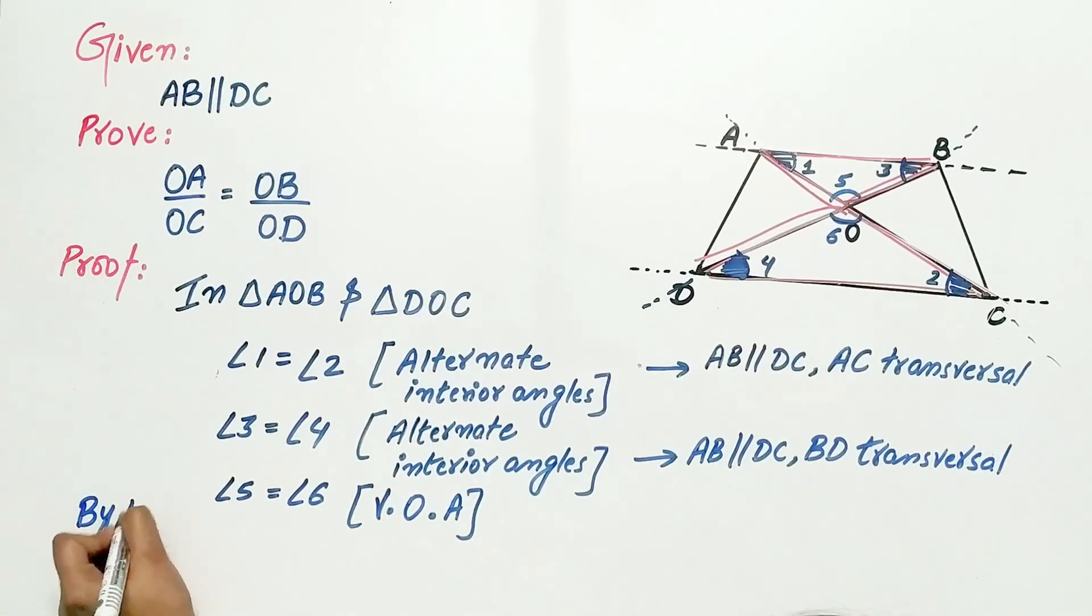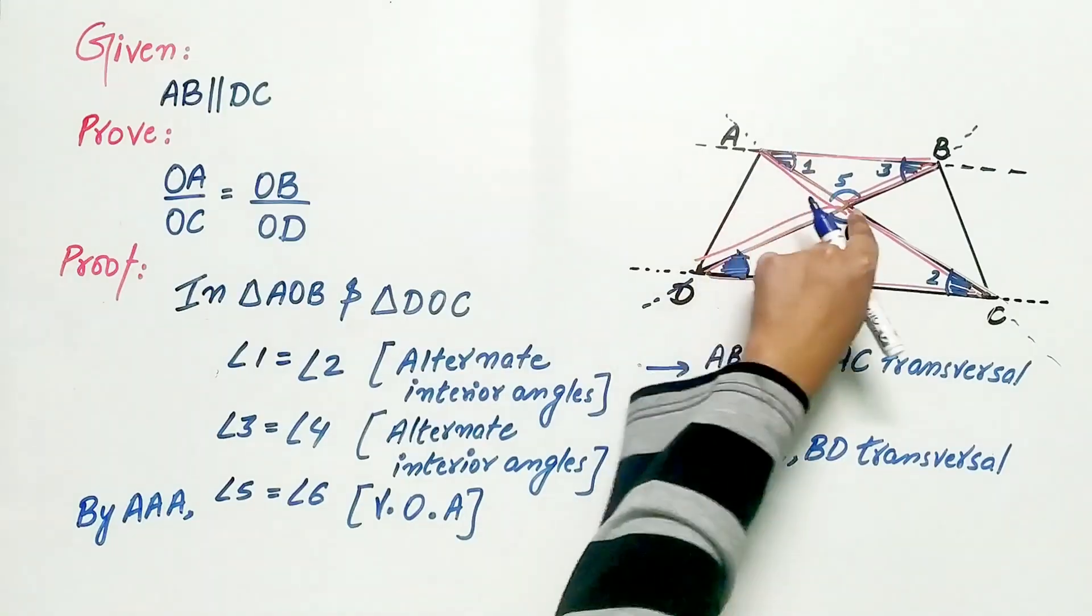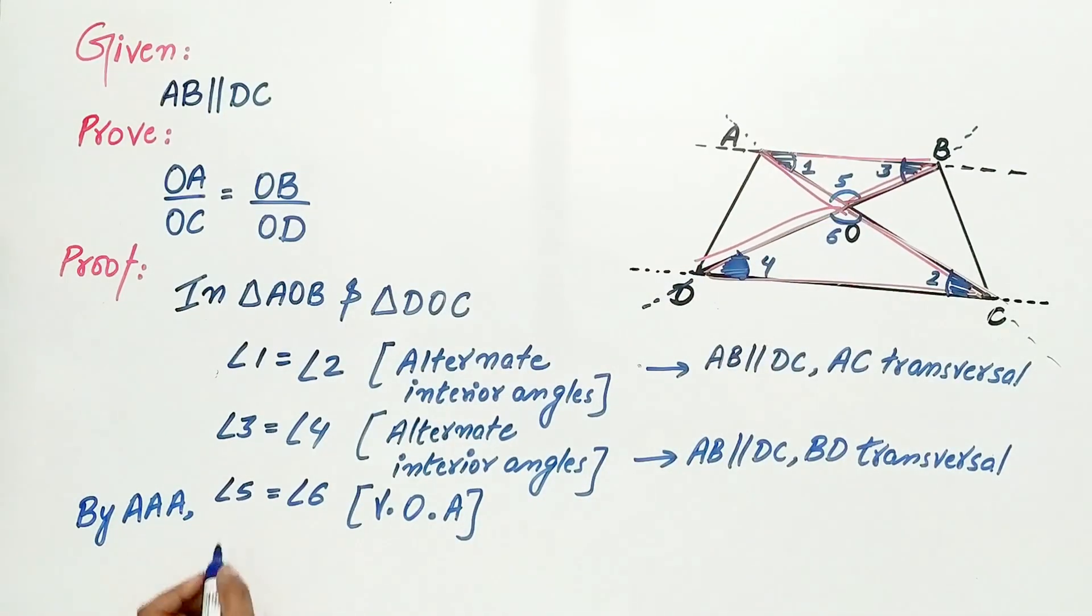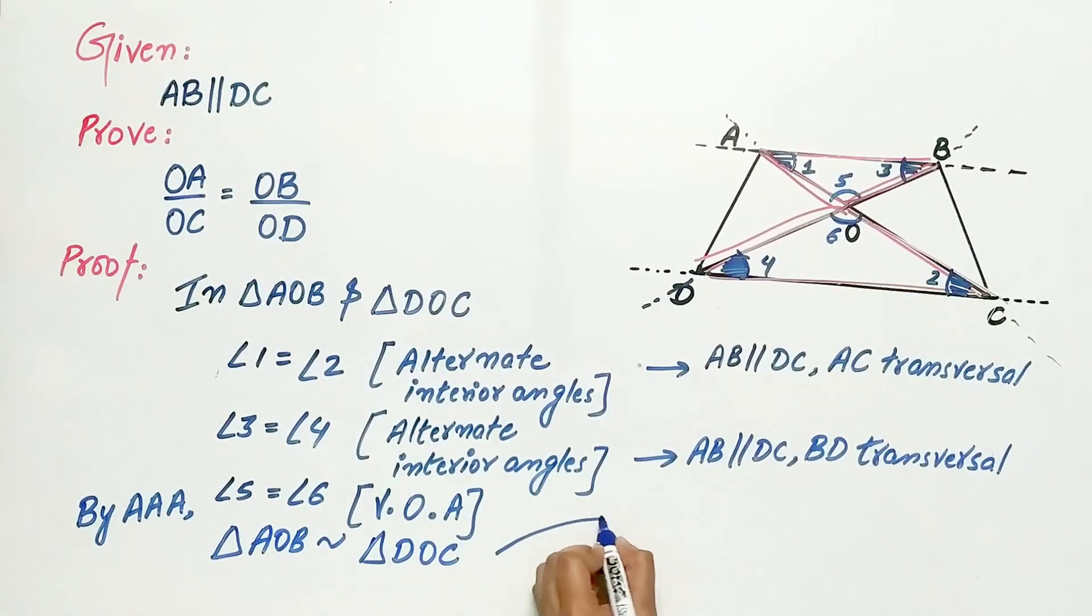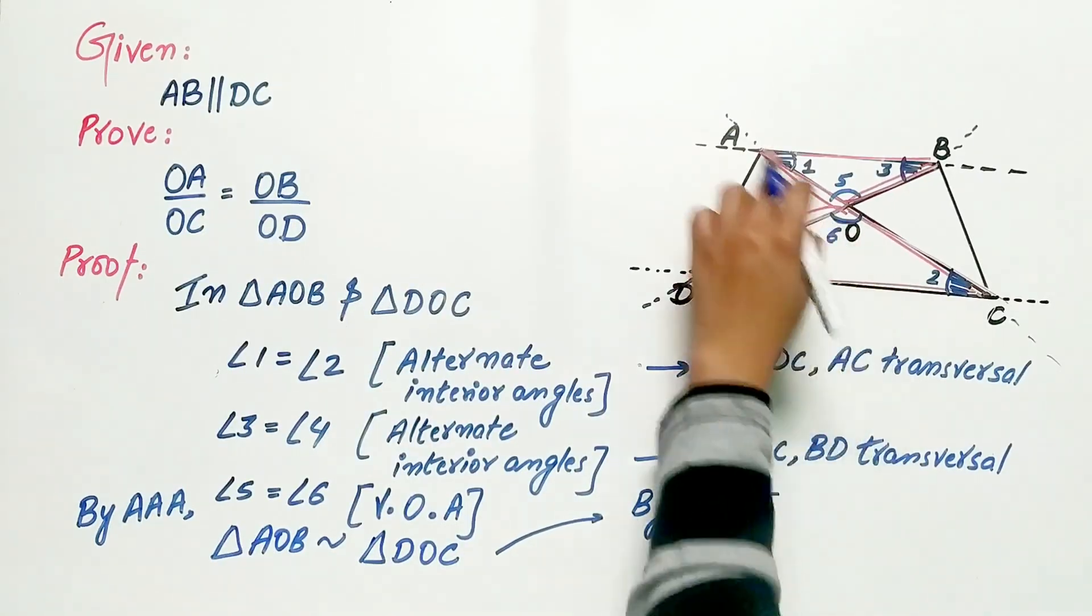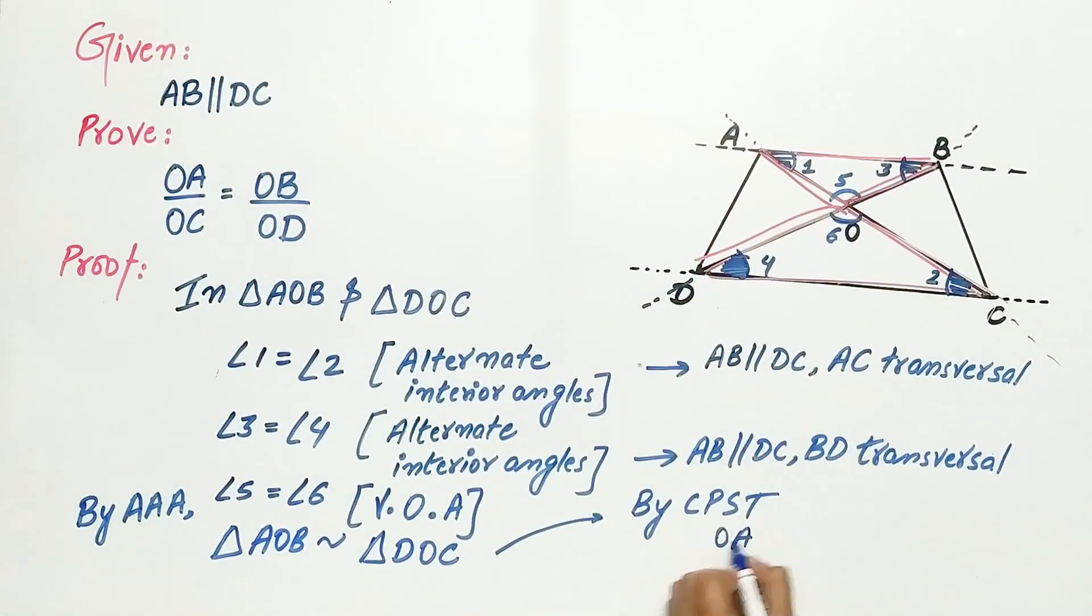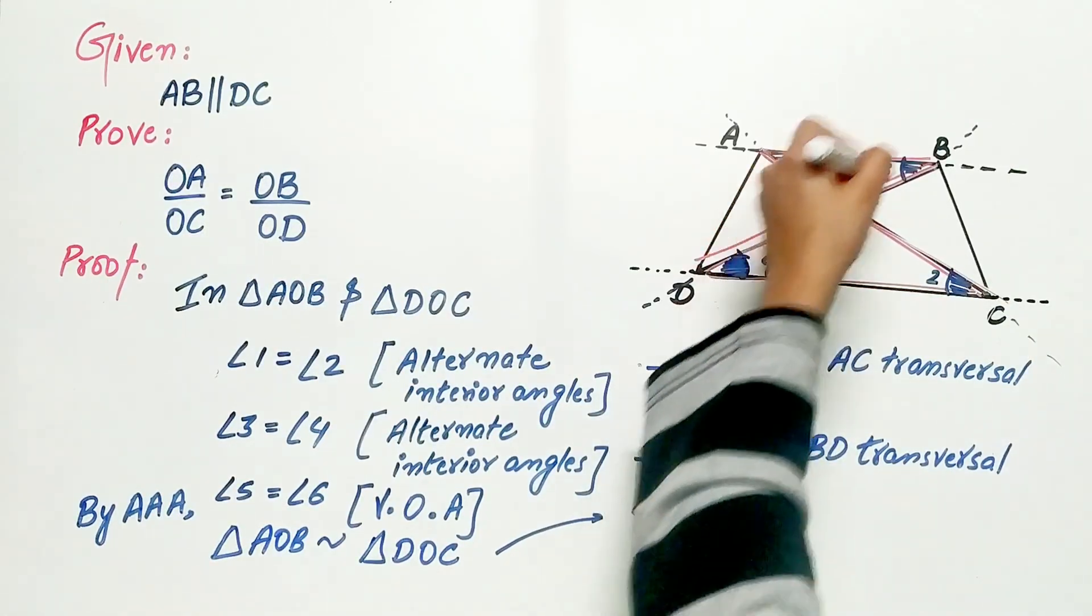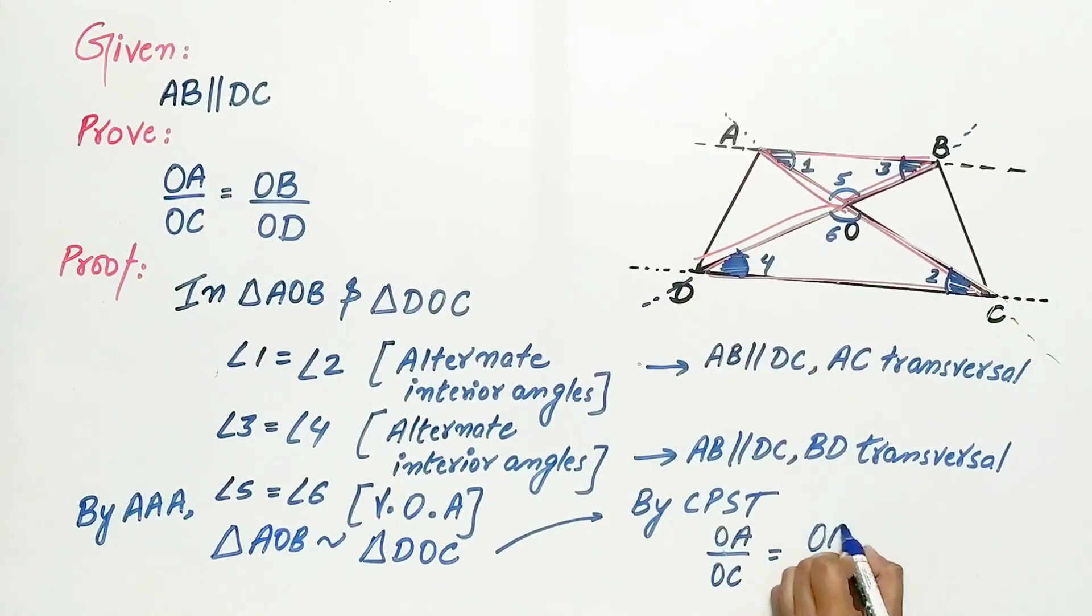Hence, by AAA or angle-angle-angle, triangle AOB is similar to triangle DOC. And by CPST, OA by OC is equal to OB by OD.